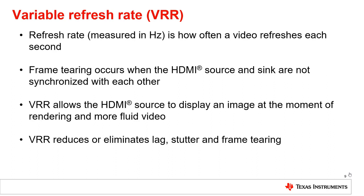Lastly, HDMI 2.1 features a Variable Refresh Rate, which varies how often a video refreshes each second. A fixed refresh rate can cause frame tearing, which is when the HDMI source and sync are not synchronized. Variable Refresh Rate allows the HDMI source to display an image at the moment of rendering and produces a more fluid video. Additionally, Variable Refresh Rate reduces and eliminates lag, stutter, and frame tearing.